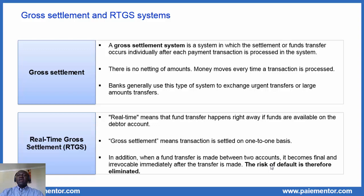In addition, in an RTGS system, when a funds transfer is made between two accounts, it becomes final and irrevocable immediately after the transfer is made. The risk of default is therefore eliminated. Moving funds every time a transaction is processed is not very efficient, but there is a risk in not moving funds right away, because it is not sure that the party that owes money will have the funds later to pay the counterparty. RTGS systems are used to eliminate that risk, which is called default risk.